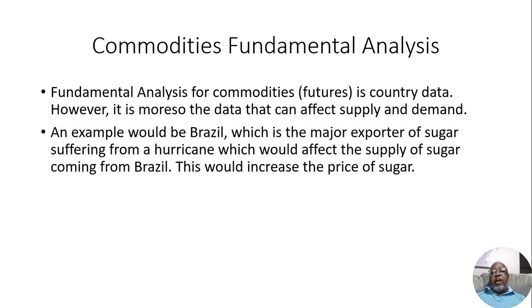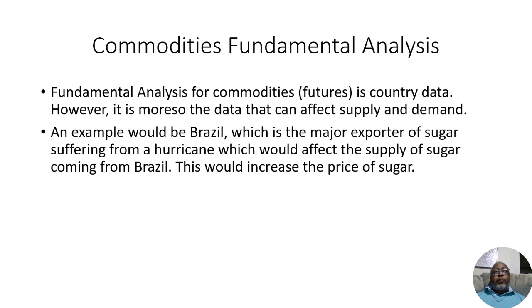During COVID lockdowns, pork is also a commodity. One of the major pork sellers in America had a lot of employees getting sick, so they were sending people home. That was affecting their supply of pork — they were actually killing pigs without selling them because they didn't have enough staff. This definitely affected commodity prices. Prices for lean hogs came down dramatically, and over time moved back up.